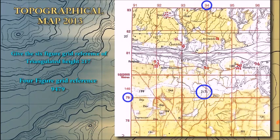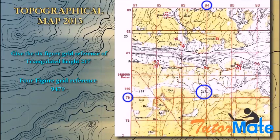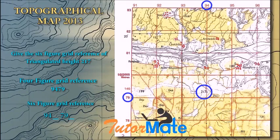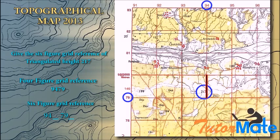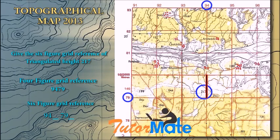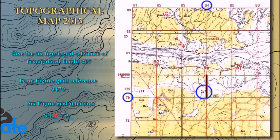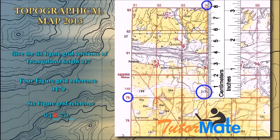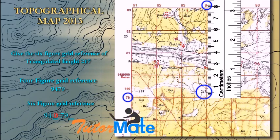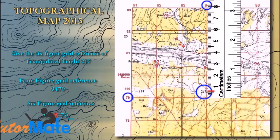So the four-figure grid reference is 9479. Now for the six-figure grid reference we have to find out the third and the sixth figure. When you look at the triangulated station, the symbol is on the line, that's why the third figure is 0. For the sixth figure, take your scale from the triangulated station till the bottom of 79 and measure. You will get six millimeters, divide by 2, and your answer will be 3.